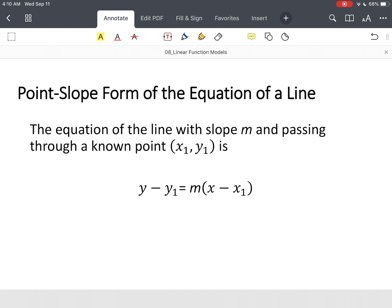Alright, another concept as it relates to equations of lines: you're not always going to be given the slope and the y-intercept. In most cases, you might be given the slope and a point, or sometimes you might even be given just two points and you have to find the slope. So we have an equation that's called point-slope form, or the equation of a line.